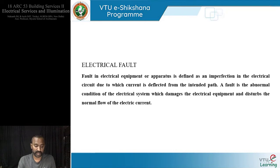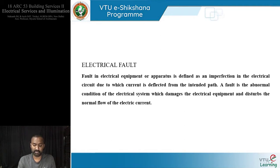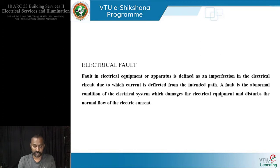A fault in electrical equipment or apparatus is defined as an imperfection in the electrical circuit due to which current is deflected from the intended path — meaning electrons are not moving in the path we intended. A fault is an abnormal condition of the electrical system which damages electrical equipment and disturbs the normal flow of electric current.